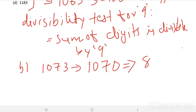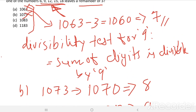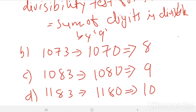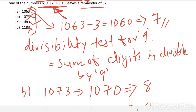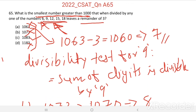Then option C: 1083. After deducting 3 we get 1080. The sum of digits equals 9, which is divisible by 9. Option D gives 1183, then 1180, whose digit sum equals 10 — not divisible by 9, so we can eliminate that option also. The right answer is option C. You can check with the divisibility test of any one of these numbers.